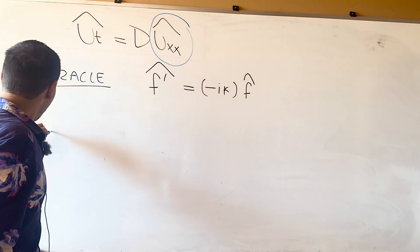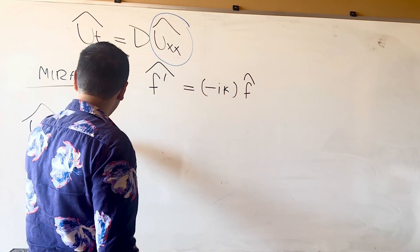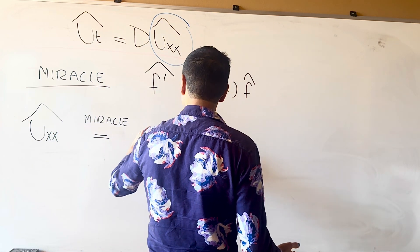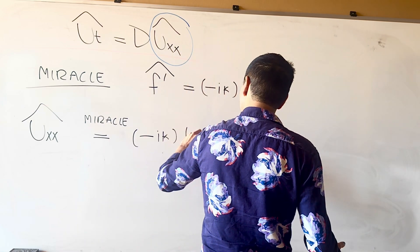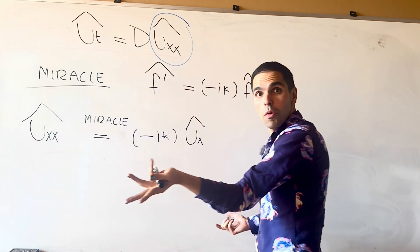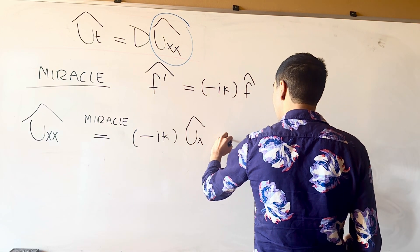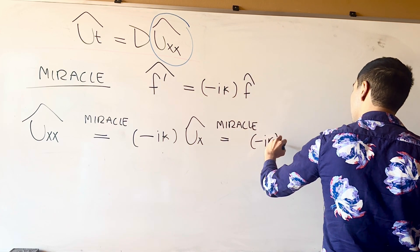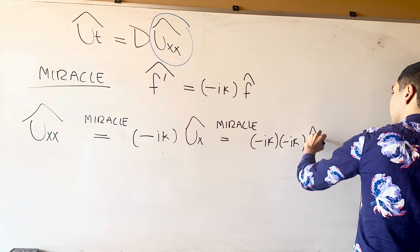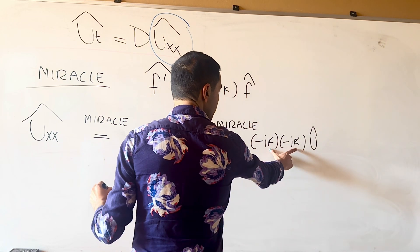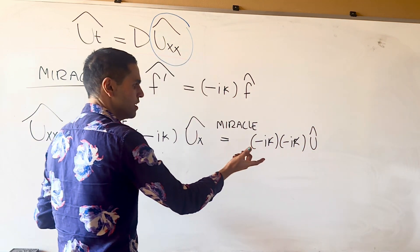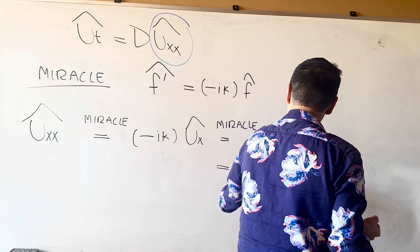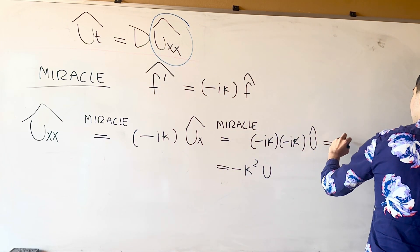So û_xx by the miracle: applying it once gives -iκ·û_x, and applying the miracle again gives -iκ times -iκ·û, which equals -κ²·û, since i² = -1.